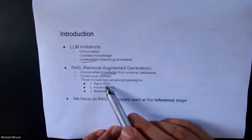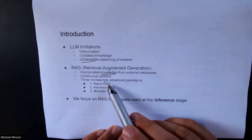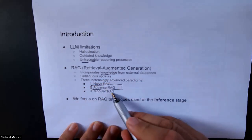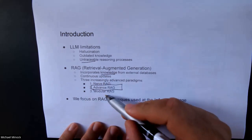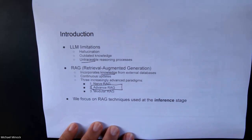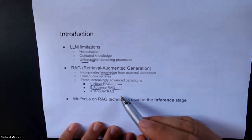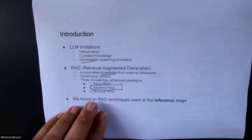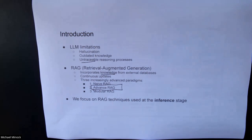There are three increasingly advanced paradigms the paper discusses. That's naive RAG, advanced RAG — which is pretty much what we'll focus on today — and what they call modular RAG, which is really out toward the research horizon and difficult to pin down, but interesting. One nice thing about the paper is they've updated it at least once. The current version is March 2024. As things develop, it might be an evolving document. Our focus will be on RAG techniques at the inference stage, though RAG could in principle be applied at the pre-training or fine-tuning stage as well.